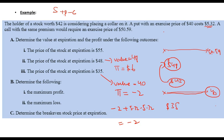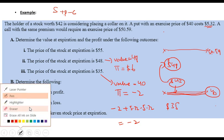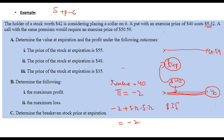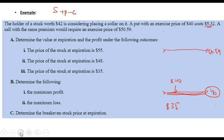Your initial stock price was $42 and the floor is at $40, so the portfolio value will not fall below $40. The loss is $40 − $42 = −$2. Maximum profit happens when the stock price rises to the ceiling, which is $50.59, giving a maximum profit of $50.59 − $42 = $8.59.